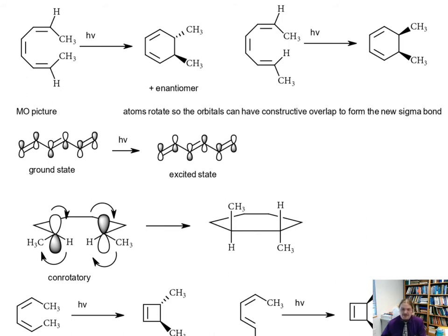We get conrotatory motion in the photochemical state for the six electron system. Now if we were to switch the orientation, let's put the methyl group here, make this a hydrogen. Now both methyl groups would be rotating in the same direction, in this case down, and we would get the syn product.